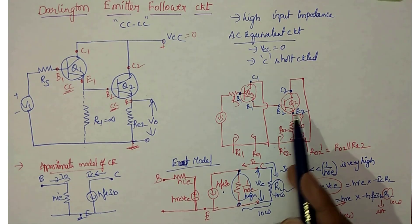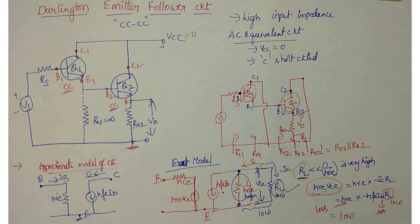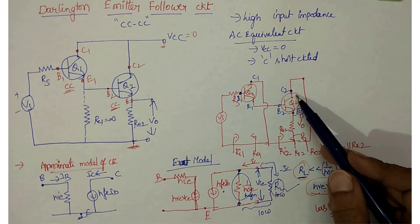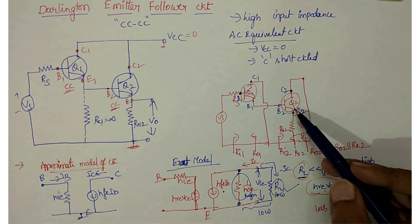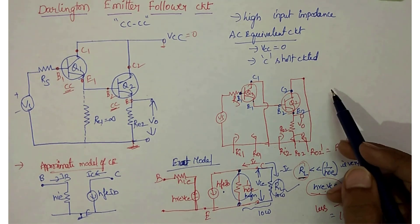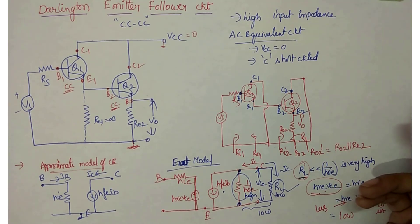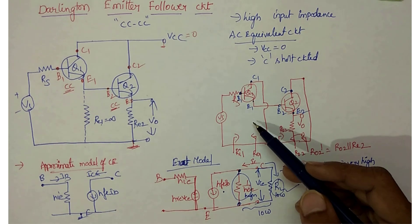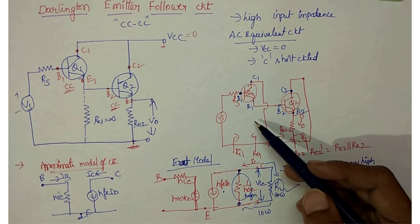With this concept, we analyze the Darlington emitter follower circuit. It has two stages. We start with the second stage and check whether the load resistance of Q2 is less than 1/HOE. If it is less, we use the approximate model; otherwise we use the exact model. The same check is applied to the first stage load resistance.